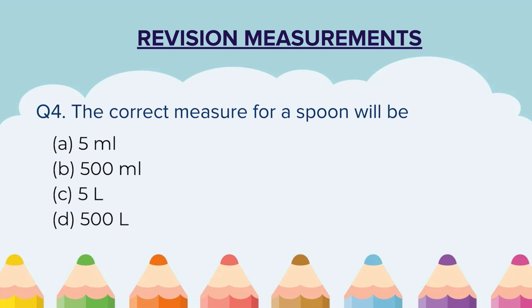Question 4: The correct measure for a spoon will be — A) 5 ml, B) 500 ml, C) 5 liters, D) 500 liters.